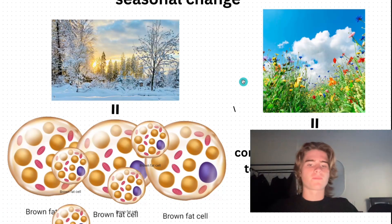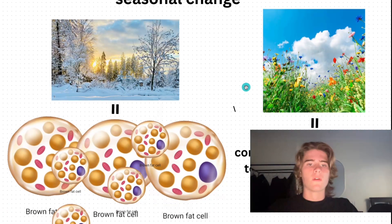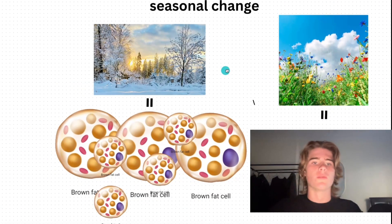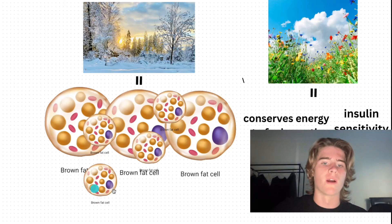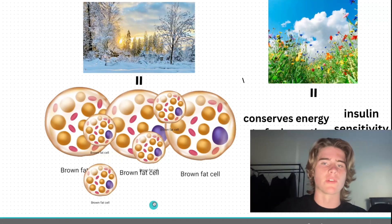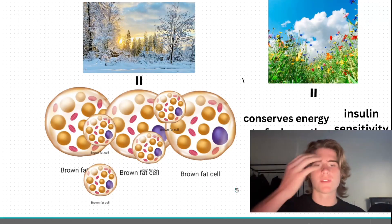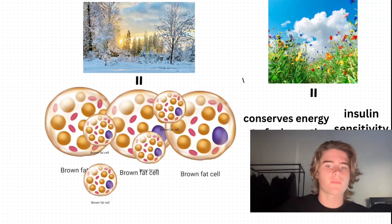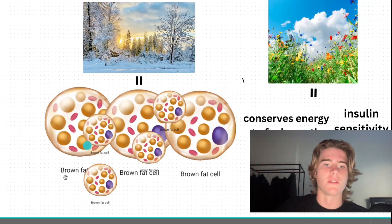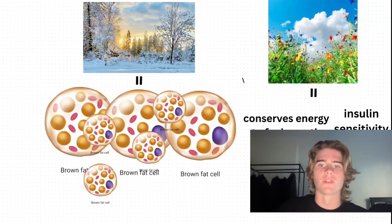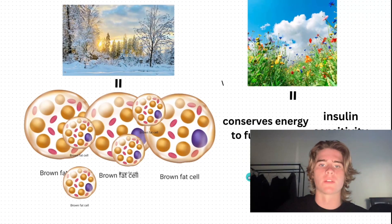Next is seasonal change. In the wintertime, we're going to have more brown fat cells, which will have more mitochondria. This upregulates mitochondrial biogenesis, meaning it's able to metabolize macronutrients and substrates more efficiently.